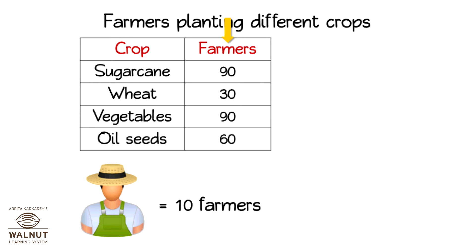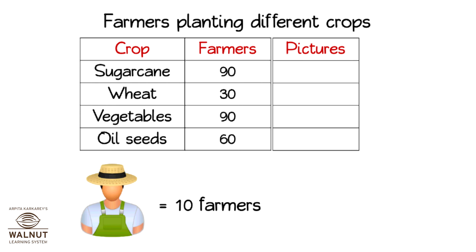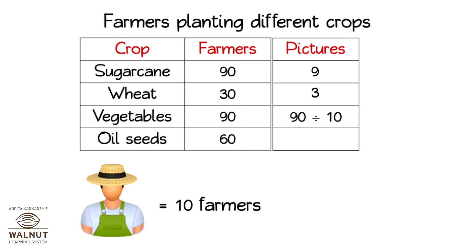Let us decide how many pictures we need to draw for each. 90 farmers of sugar cane will have 90 divided by 10, which is 9 pictures. 30 farmers of wheat will have 30 divided by 10, which is 3 pictures. 90 farmers of vegetables will have 90 divided by 10, which is 9 pictures. 60 farmers of oilseeds will have 60 divided by 10, which is 6 pictures.